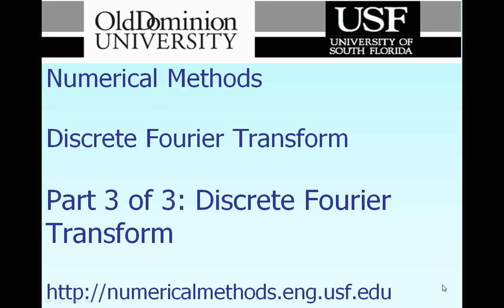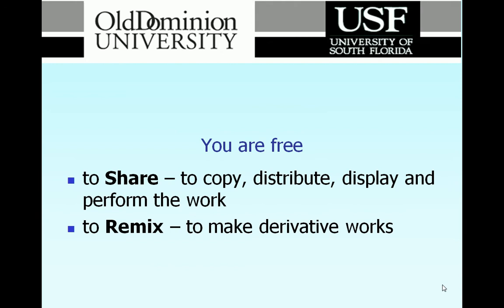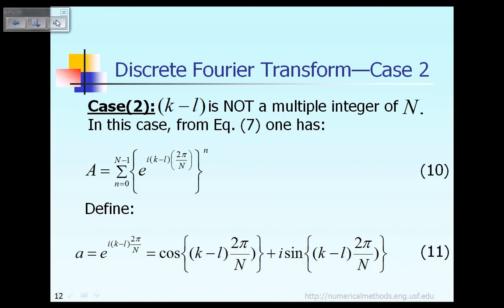What is case number 2? Case number 2, we're talking about k minus L is not a multiple integer of capital M. In that case, equation 7 becomes what?